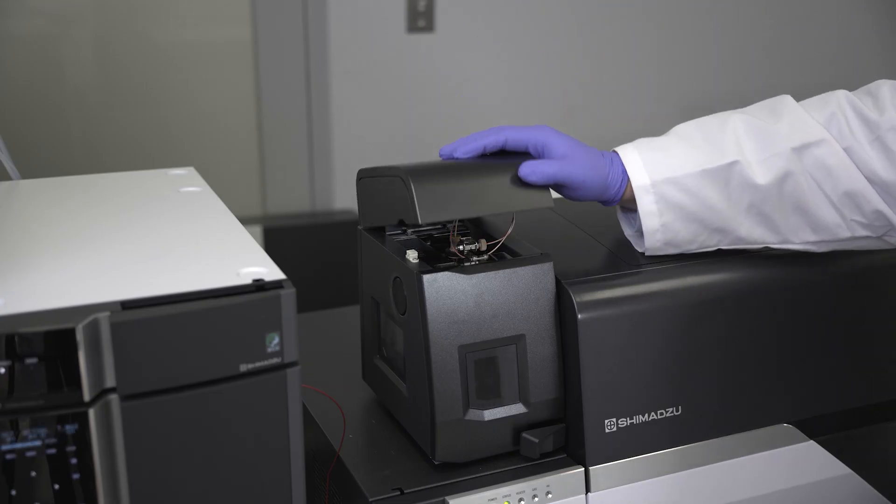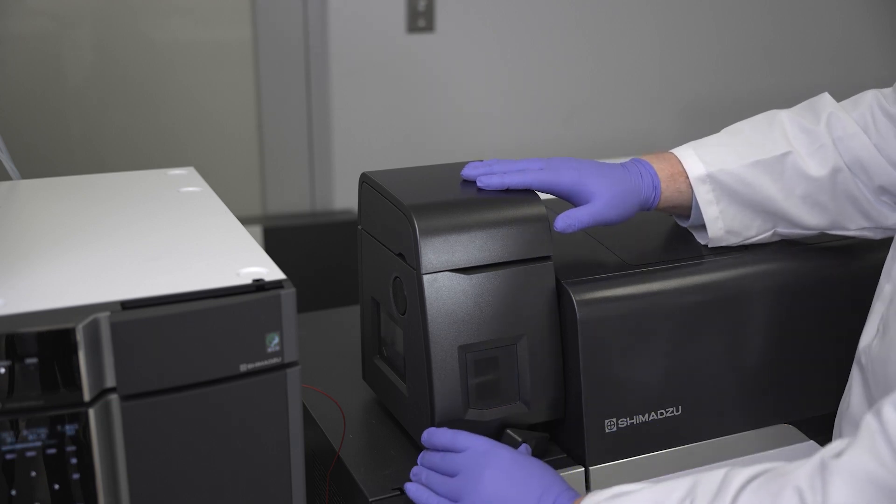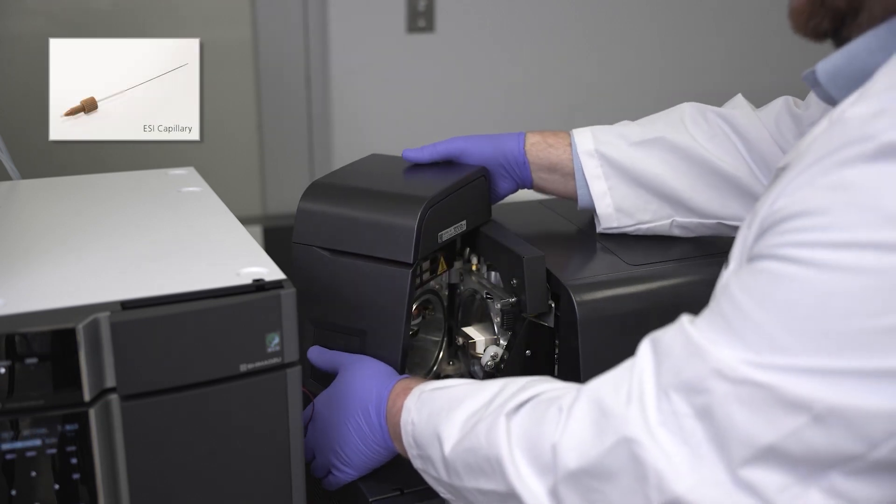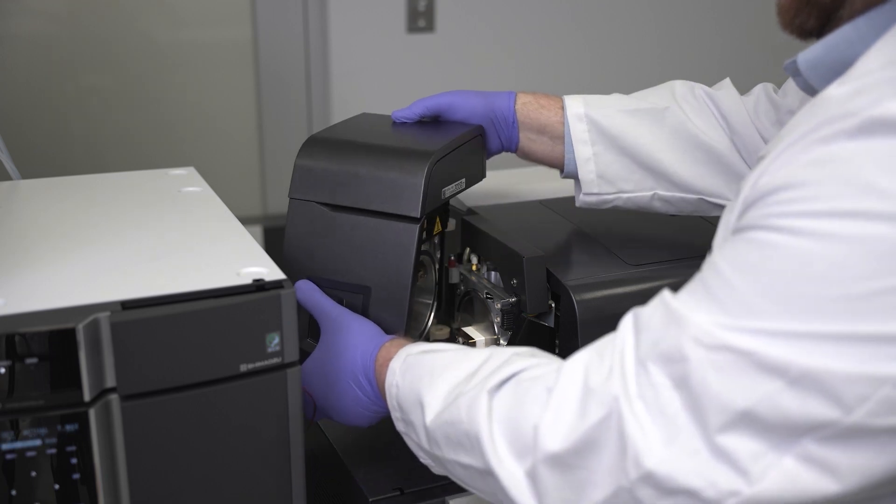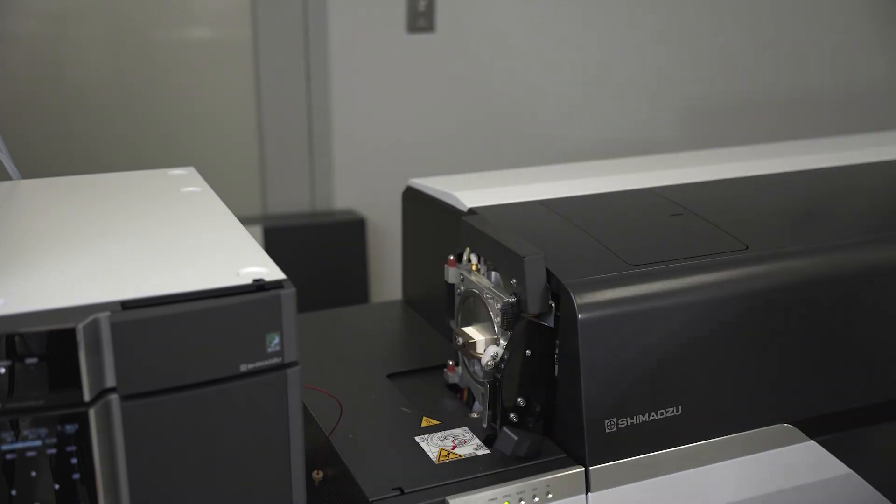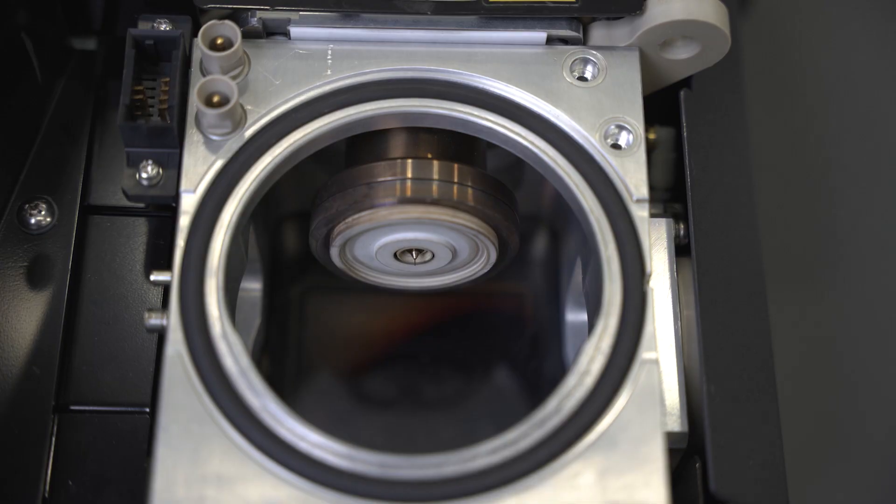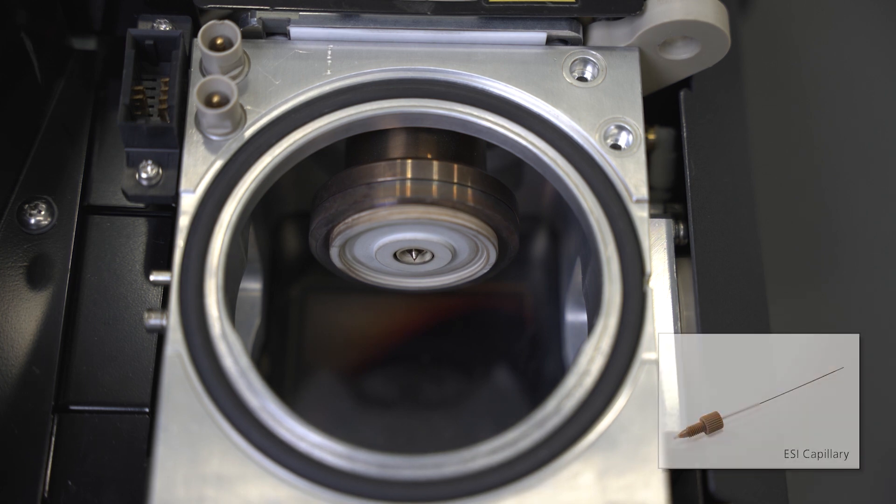Unlock and remove the ionization unit. Remove the corona needle, if present. Adjust the projection length of the ESI capillary to less than 0 mm to prevent injury to you or the instrument.